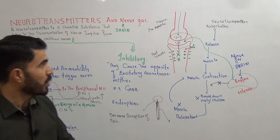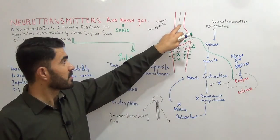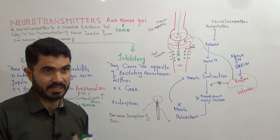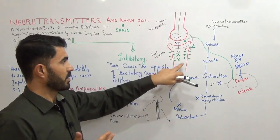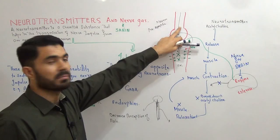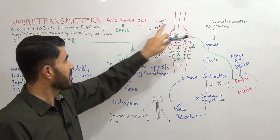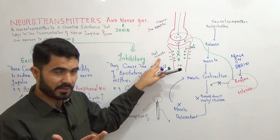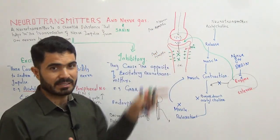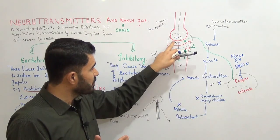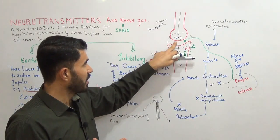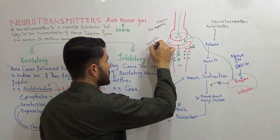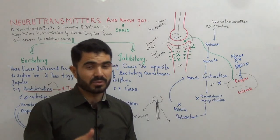Neurotransmitters are of two types: excitatory and inhibitory. Excitatory neurotransmitters allow the nerve impulse to pass from one neuron into another — they allow the message to cross the bridge and enter the next neuron. The first neuron is called the presynaptic neuron, the second is called the postsynaptic neuron, and the space between them is called the synapse. The small gap is called the synaptic cleft.